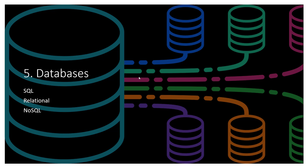Number five is databases — that is SQL, relational databases, and NoSQL. I will cover MongoDB as well in this chapter, and also at the same price we will cover MongoDB, ExpressJS, and NodeJS.